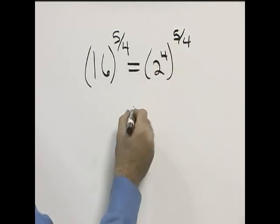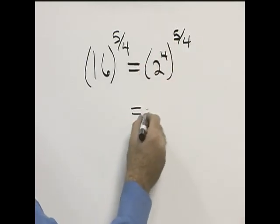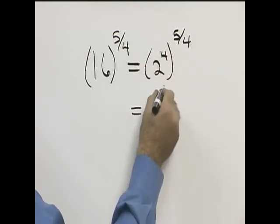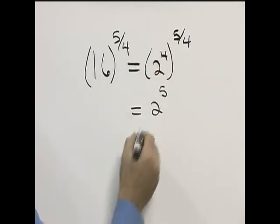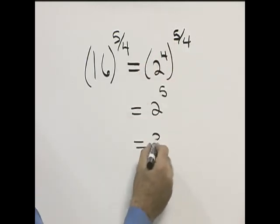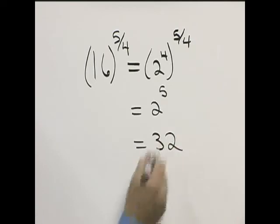Our fours cancel and we're left with 2 to the fifth. And 2 to the fifth is 32, so evaluating we get 32.